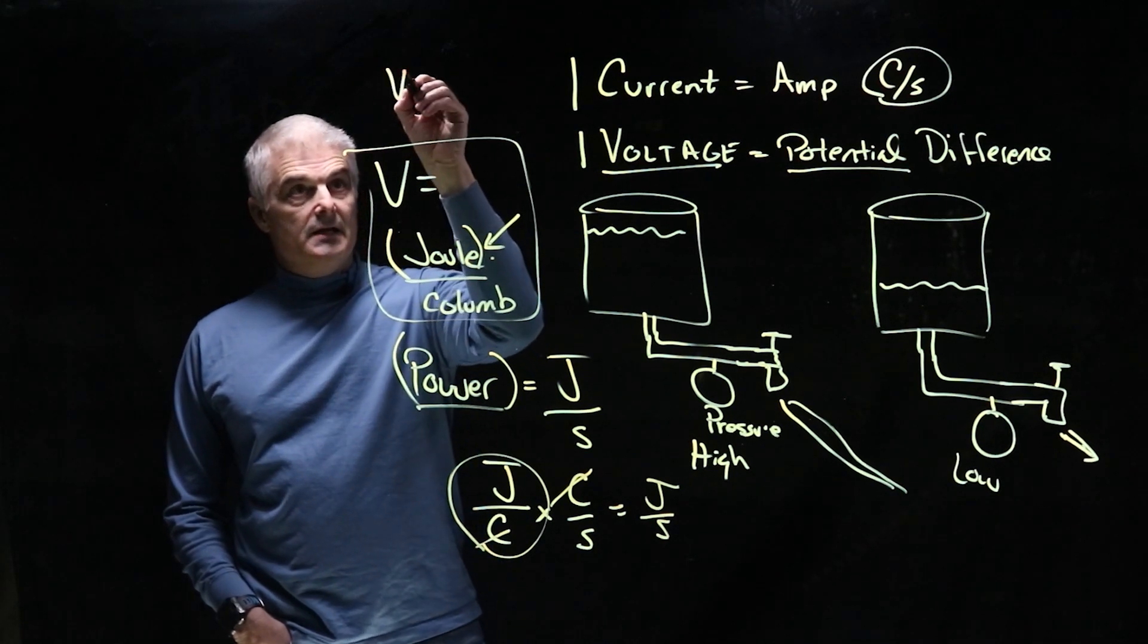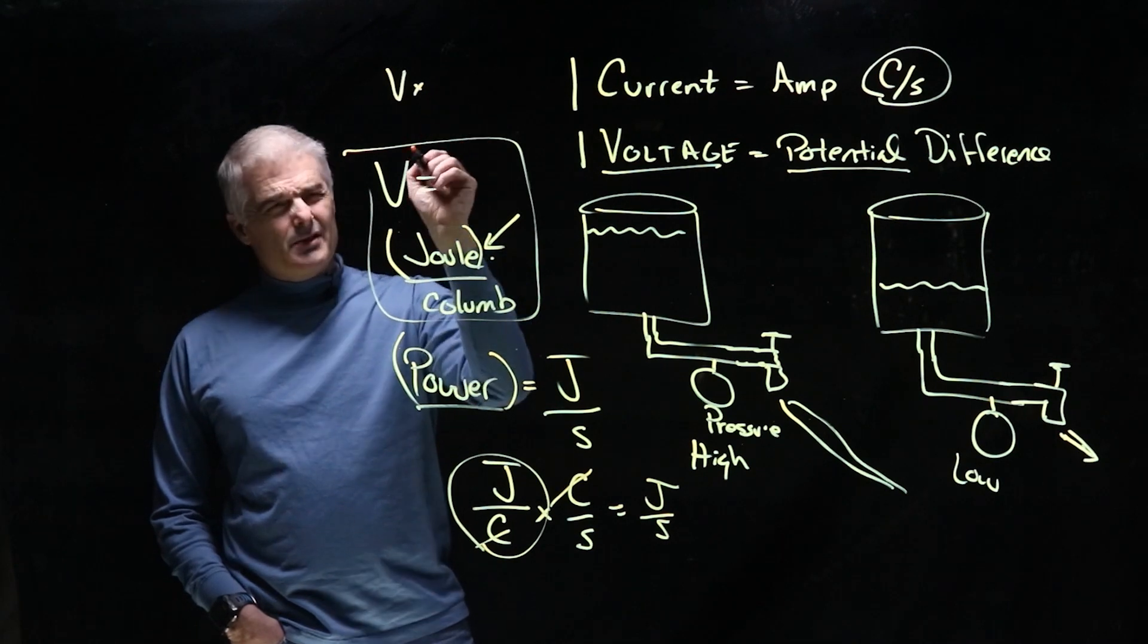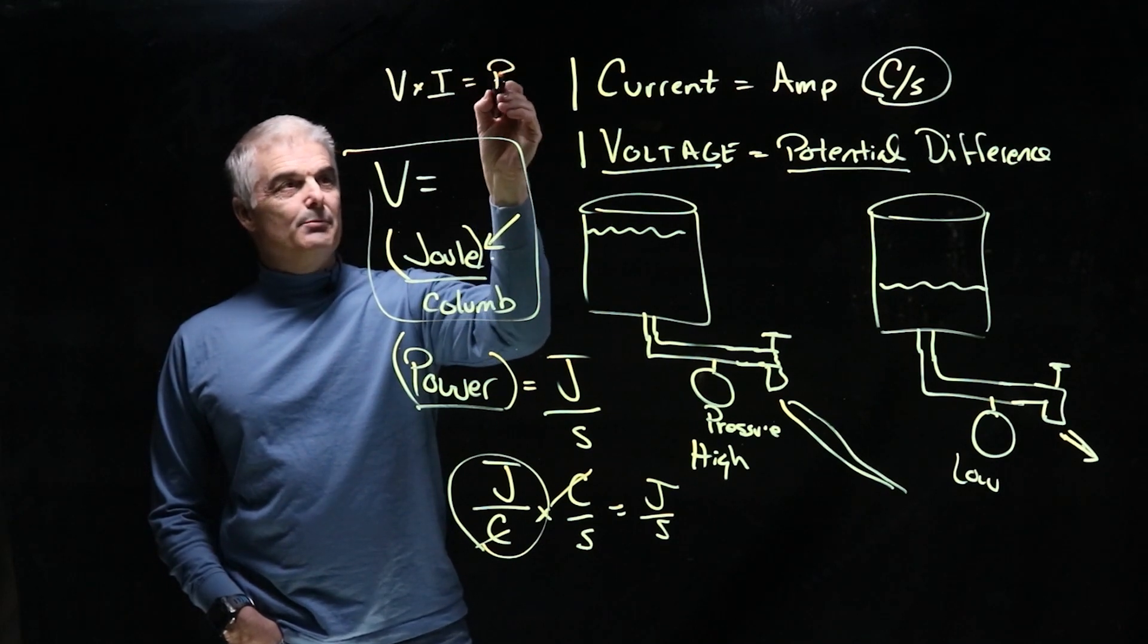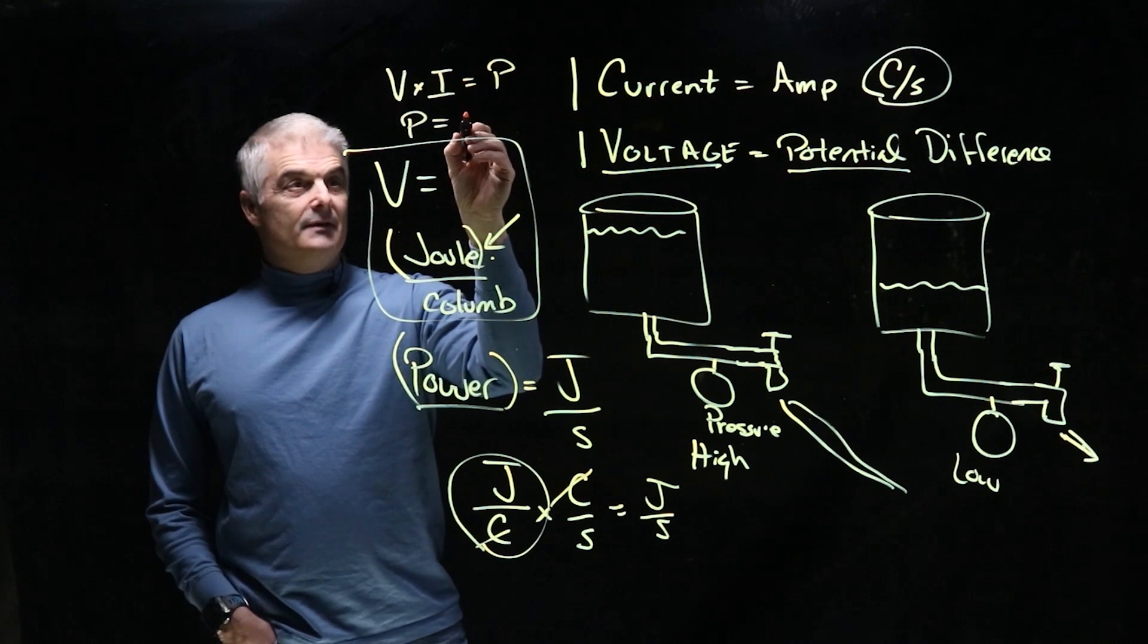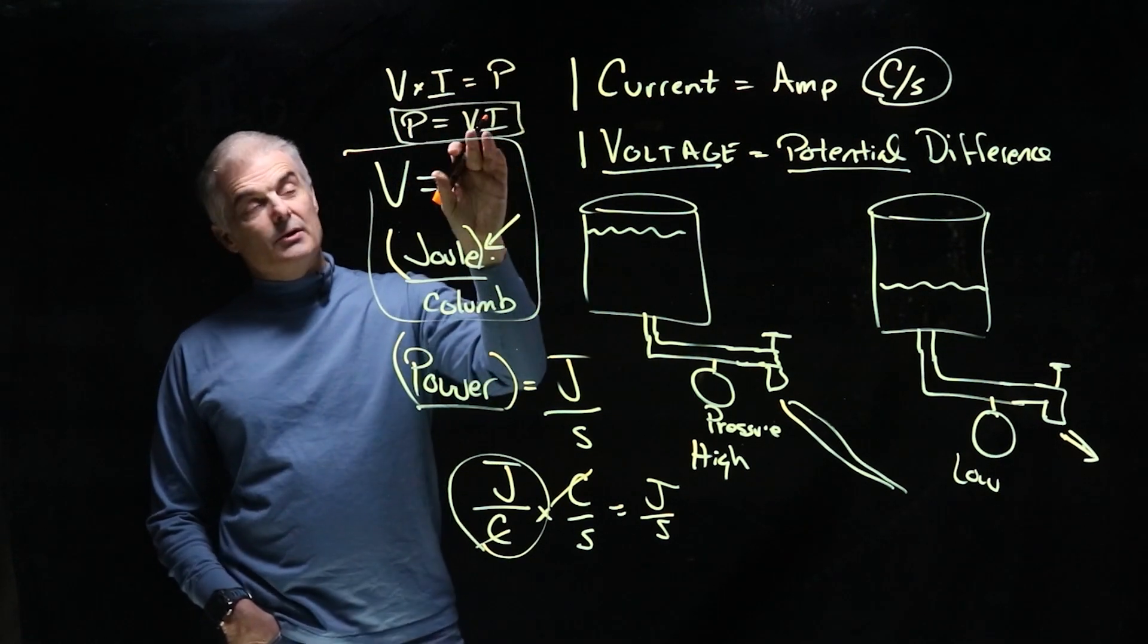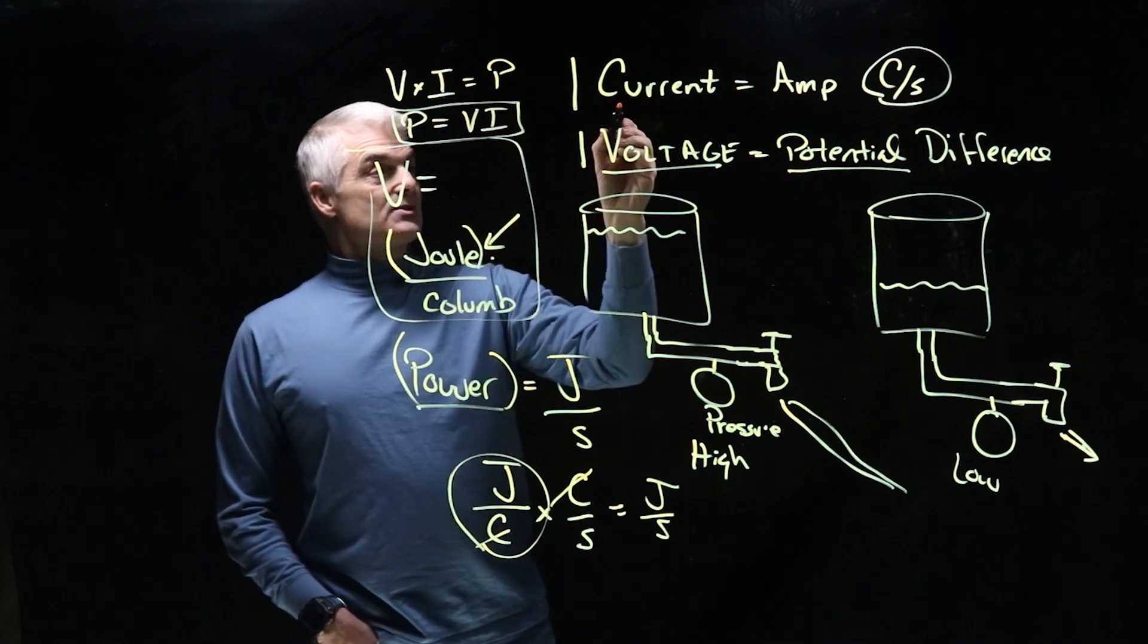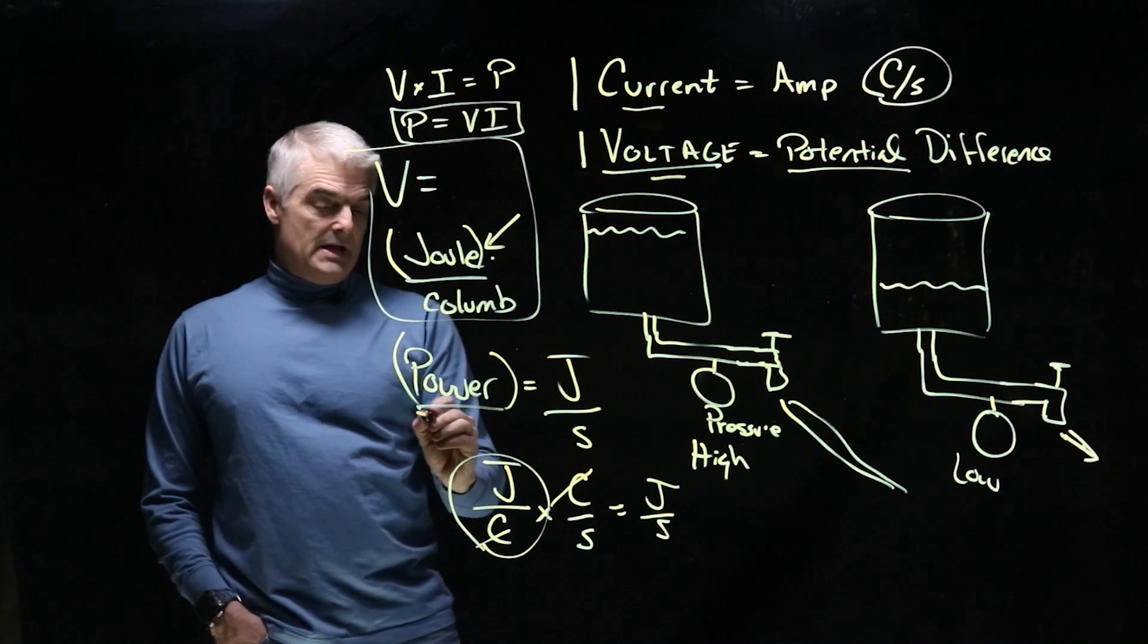So I can say V times the amp, the current. Now by the way, the symbol for current is an I. I don't know why. That equals the P, the power. So sometimes we say P is equal to V times I. So we can calculate knowing the voltage and the amperage, the power, or whatever that might be. So this explains important terms: currents, volts, and power.